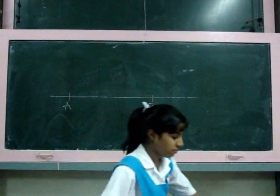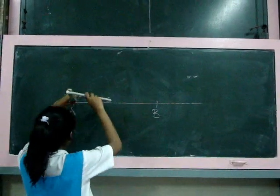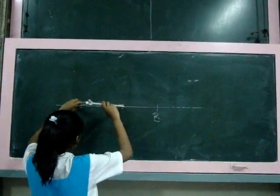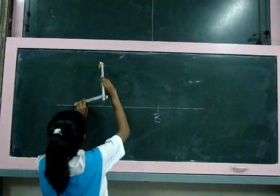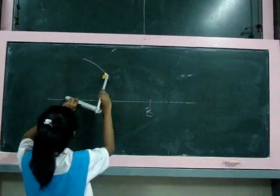Step 1: Open the compass so that the width of the opening is slightly more than half the length of AB. Place the point of the compass at A and draw two small arcs above and below the line AB.